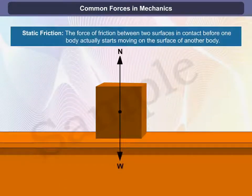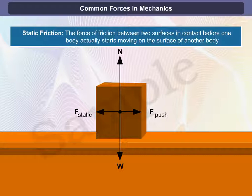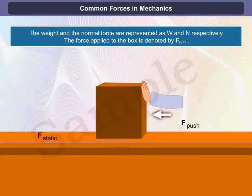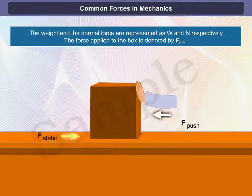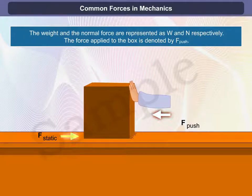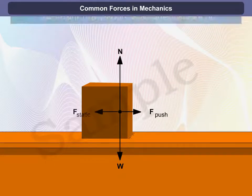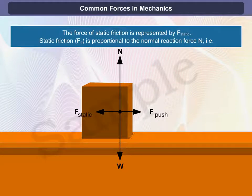The force of friction between two surfaces in contact before one body actually starts moving on the surface of another body is called static friction. In the given diagram, the weight and the normal force are represented as W and N respectively, and the force applied to the box is denoted by F push. The force of static friction is represented by F static.